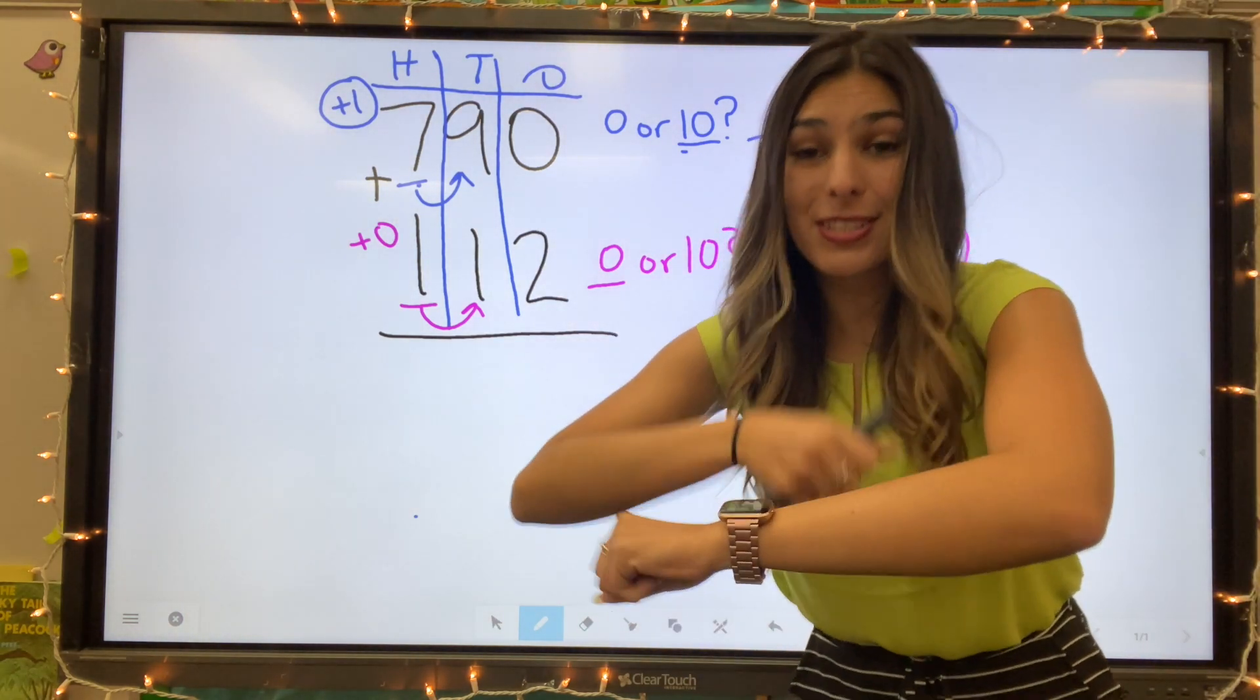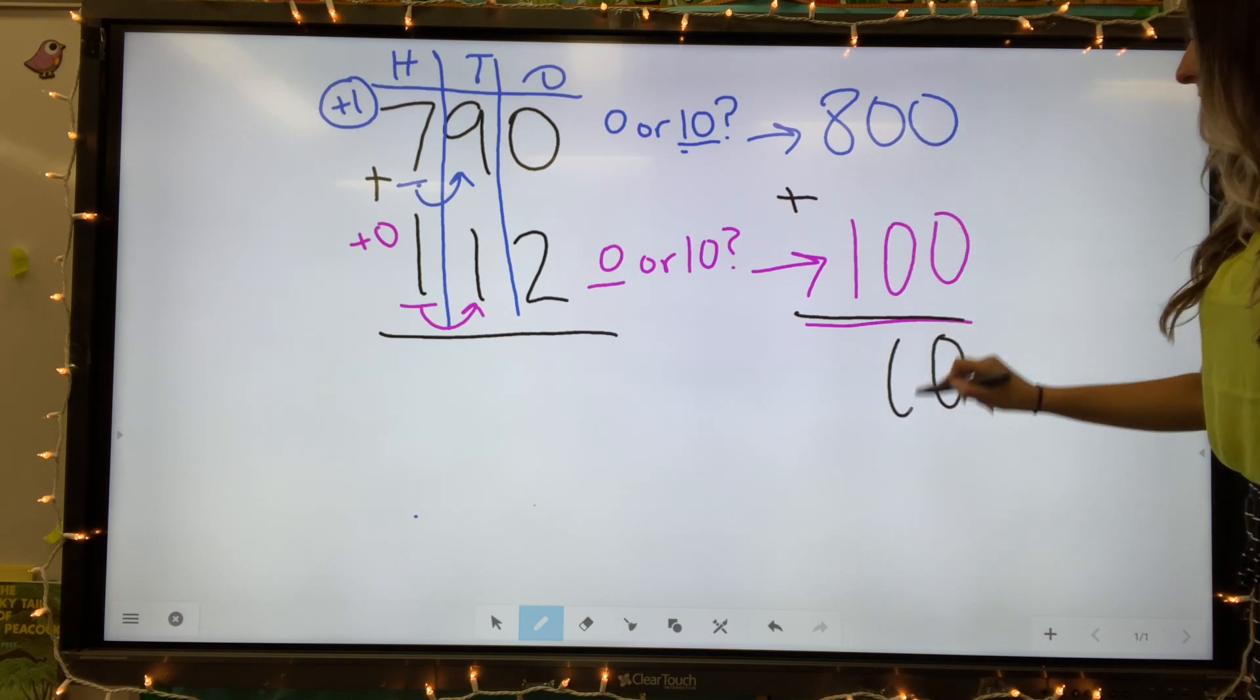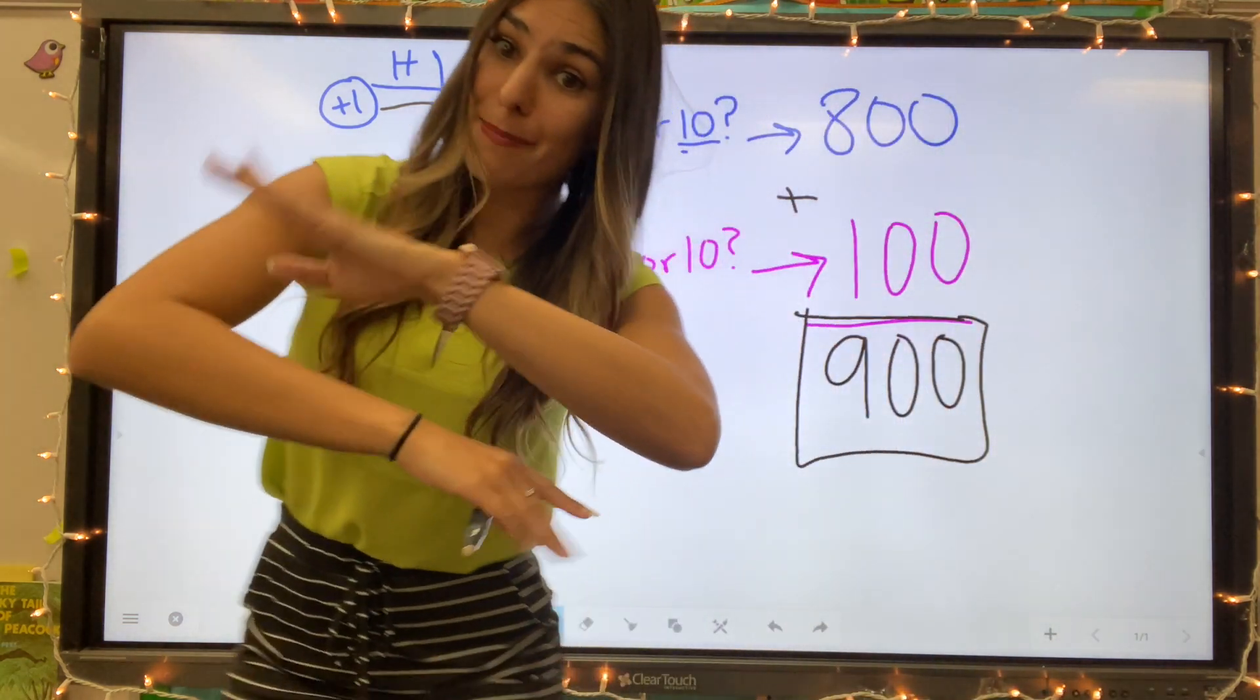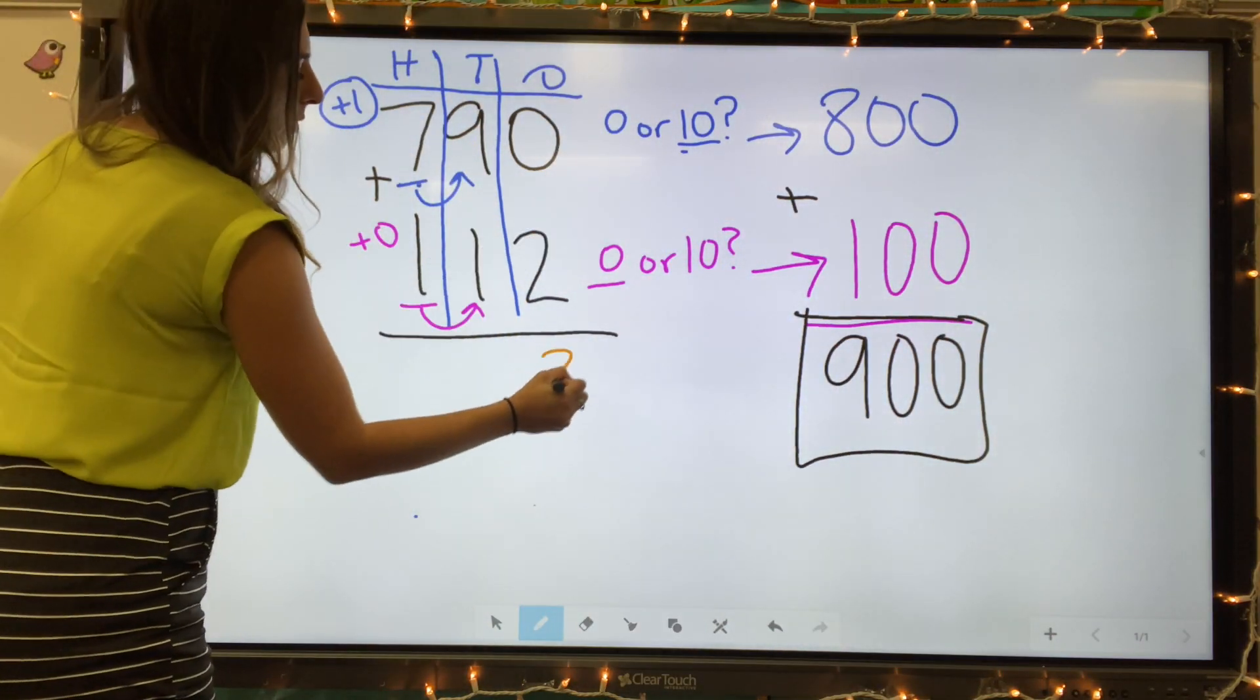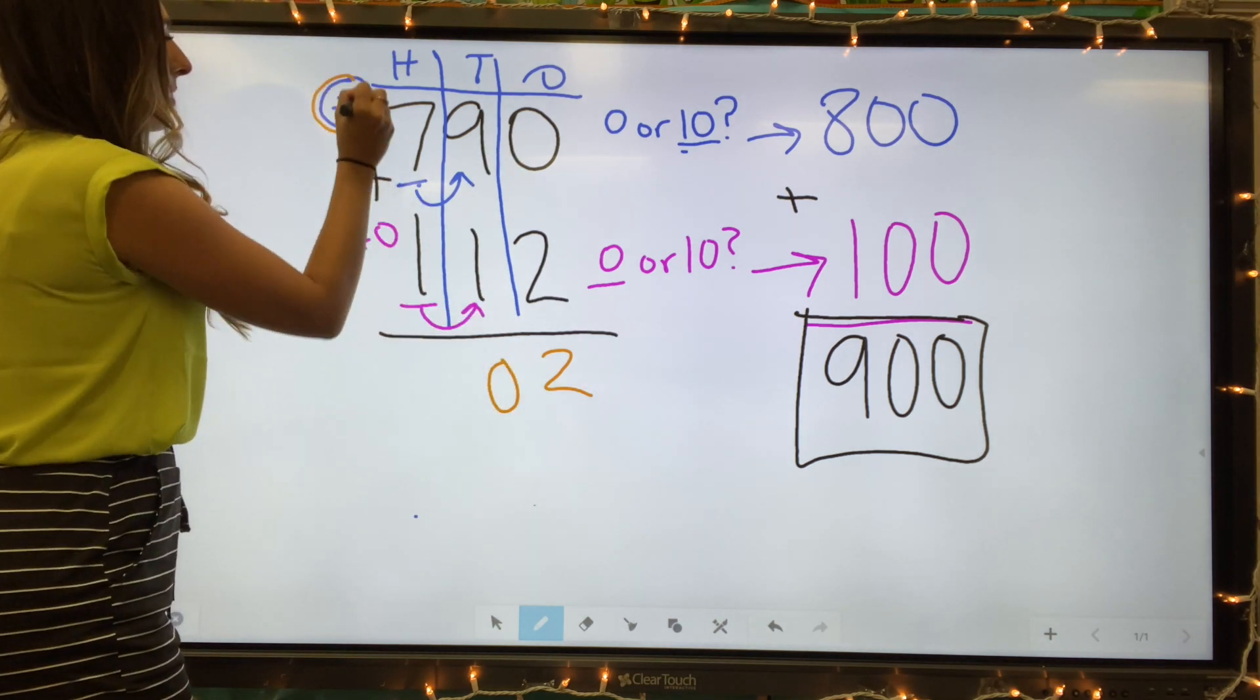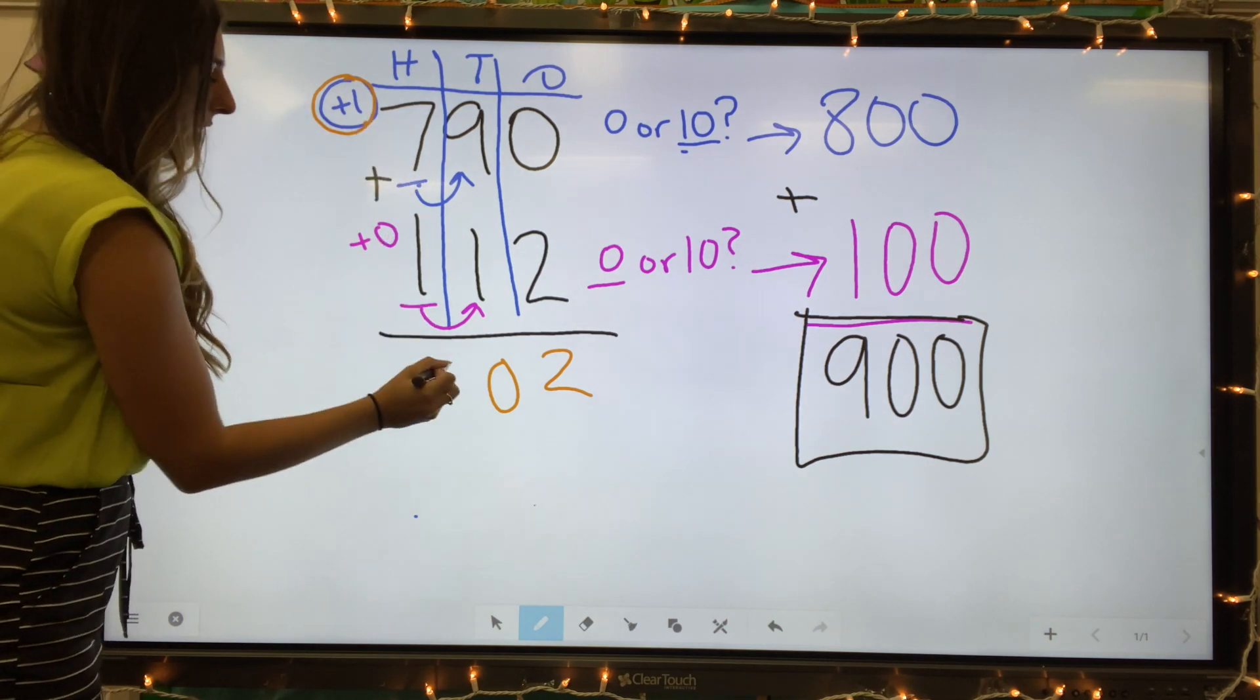And now that we've rounded our numbers, we're ready to add. Zero plus zero equals zero. Zero plus zero equals zero. Eight plus one equals nine. So our estimated sum is 900. Let's double check our work. Zero plus two equals two. Nine plus one equals ten. I'm going to carry that one that's up here. Seven plus one equals eight. Plus one equals nine.